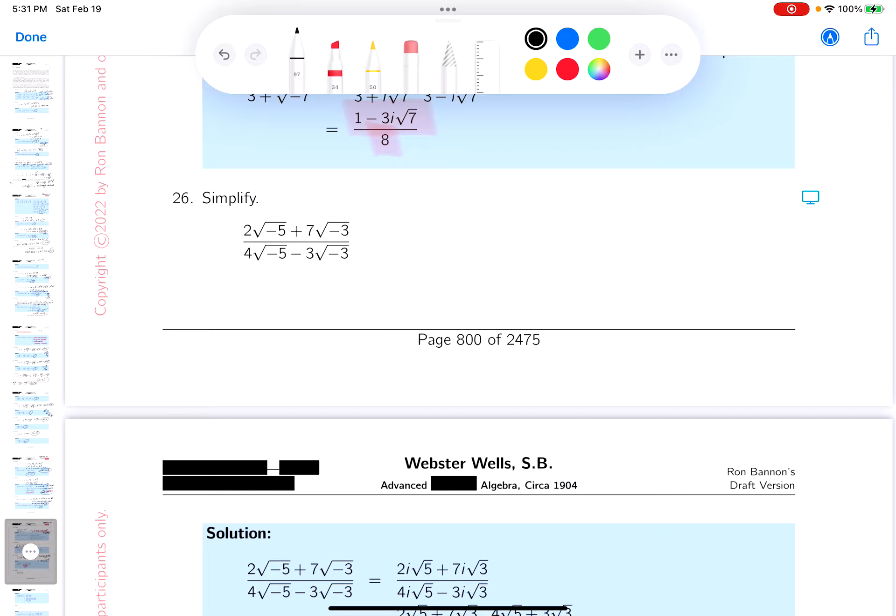Okay, I can't say enough. Get those i's out. And what do you get over here? 2i root 5 plus 7i root 3, 4i root 5 minus 3i root 3. Okay, divide through by i. You get something pretty simple now. You get 2 root 5 plus 7 root 3. On bottom you get 4 root 5 minus 3 root 3.